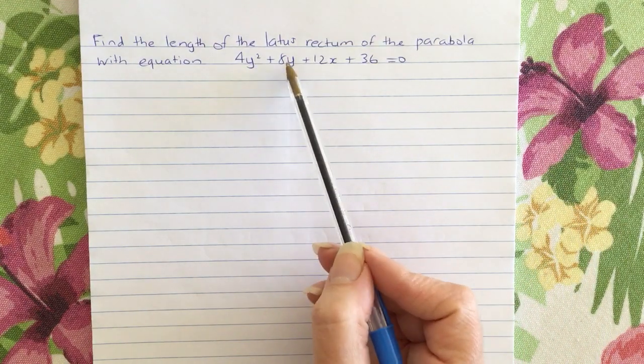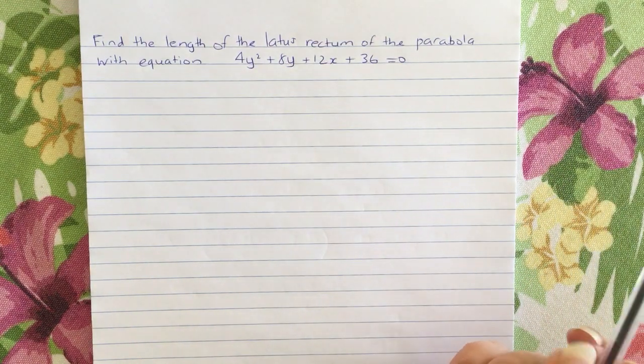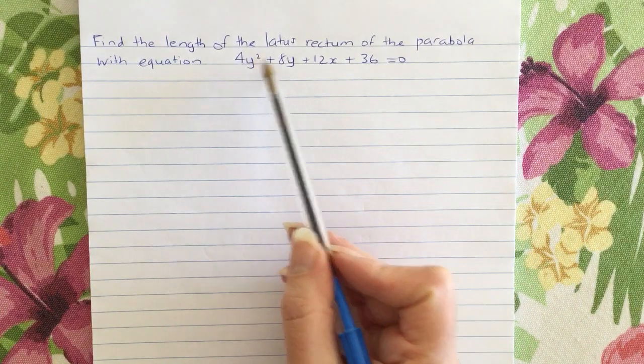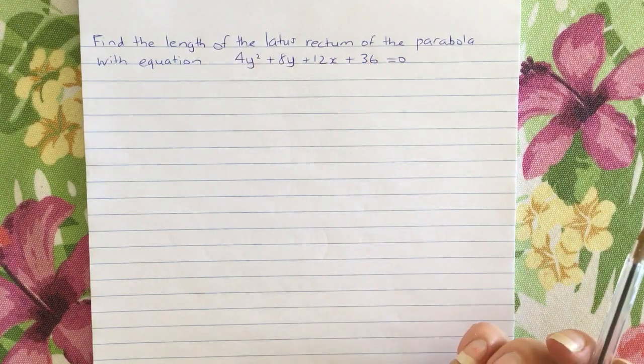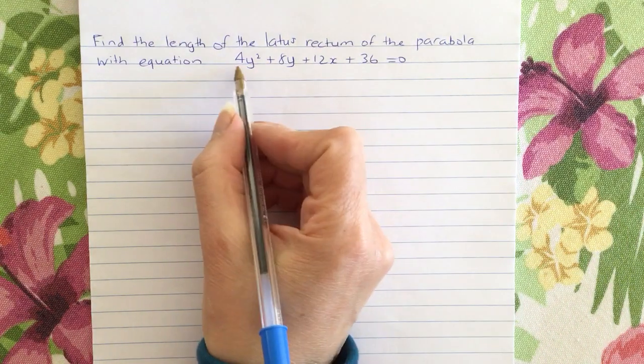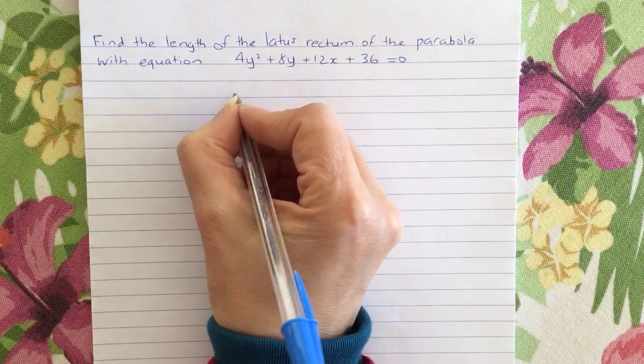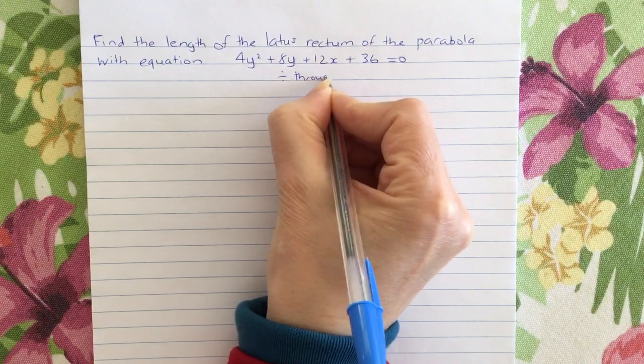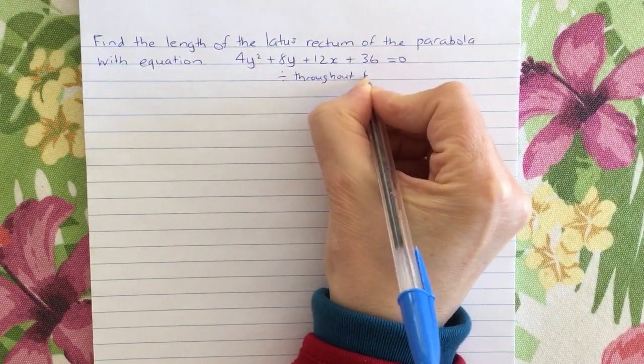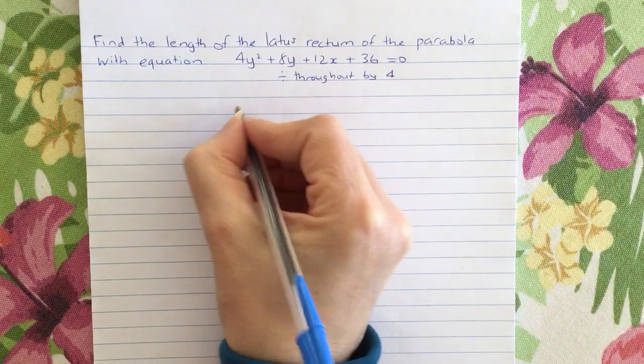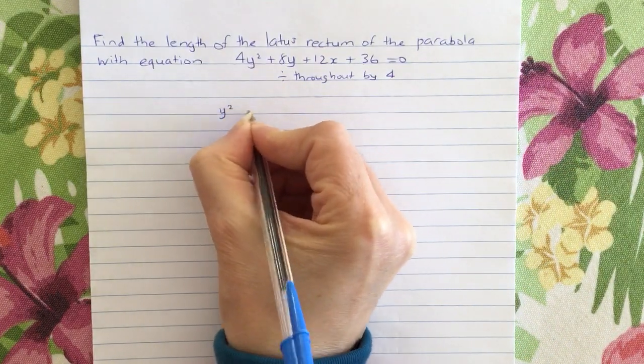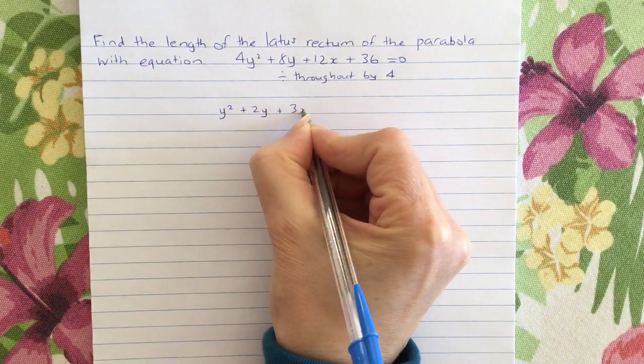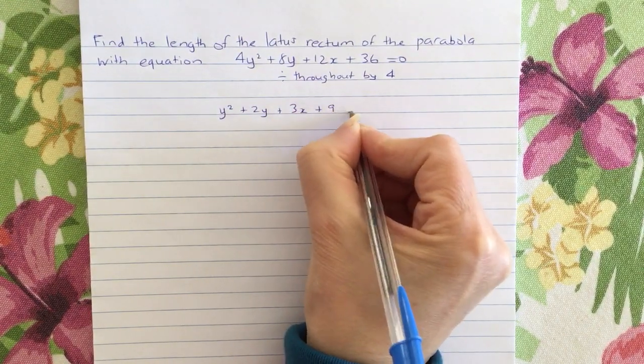Now clearly there is a common factor which we can get rid of, and that common factor is 4, because 4 goes into every term. So if you divide throughout by 4, you're going to get y² + 2y + 3x + 9 = 0.